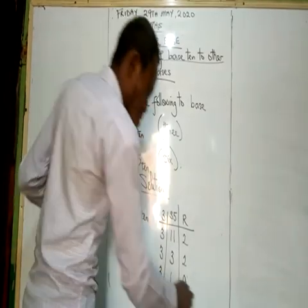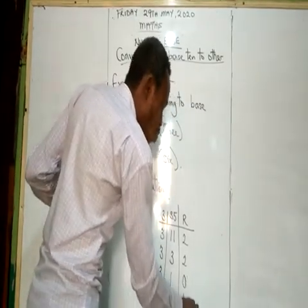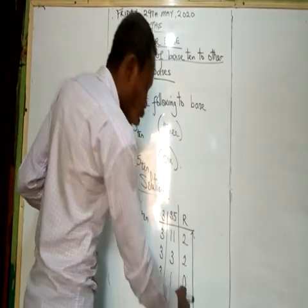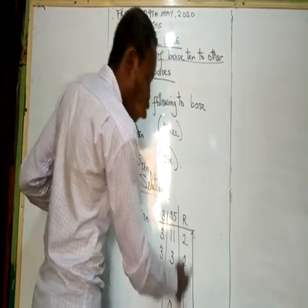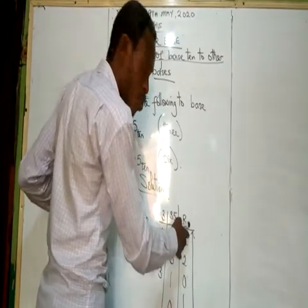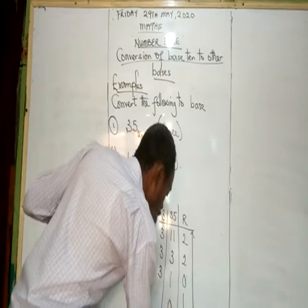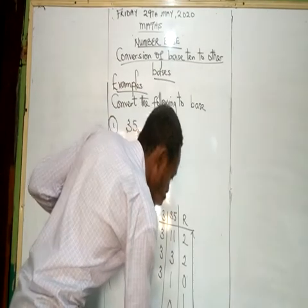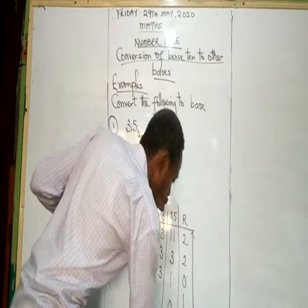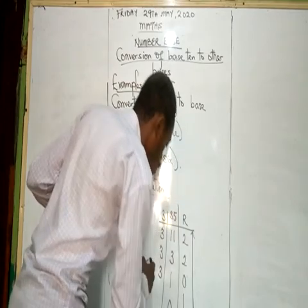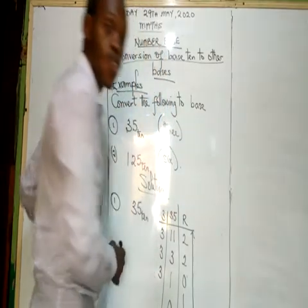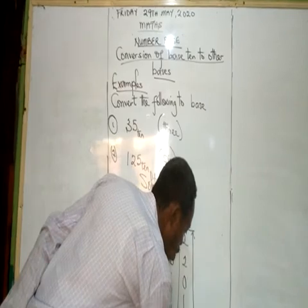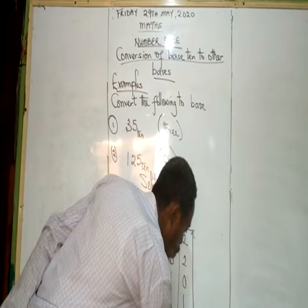So my final answer — you take it from the bottom to the top. My final answer is equal to 1, 0, 2, 2. Don't forget to write your base, which is base 3.